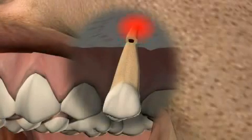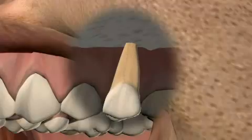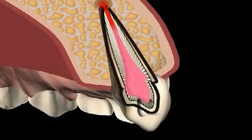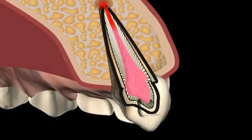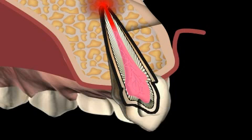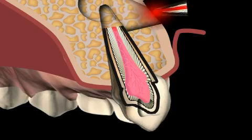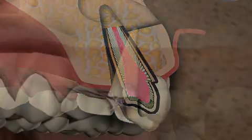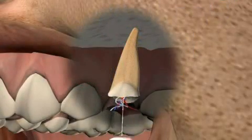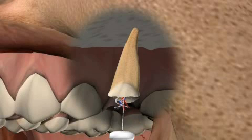If the root treatment revision does not lead to the desired result, or if the infection is already too large, the surgical cleaning of the so-called focus — also known as a root tip resection — is usually the last option. Hence, tooth canal filling and cleaning are a top priority, both during root treatment and root tip resection.